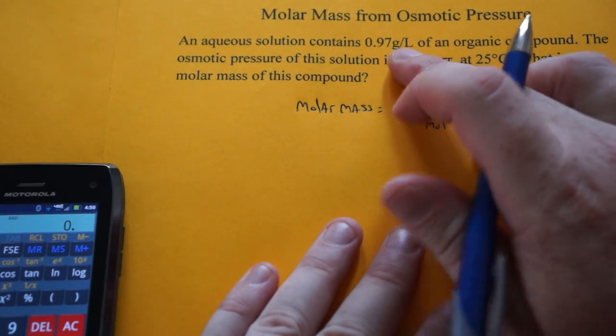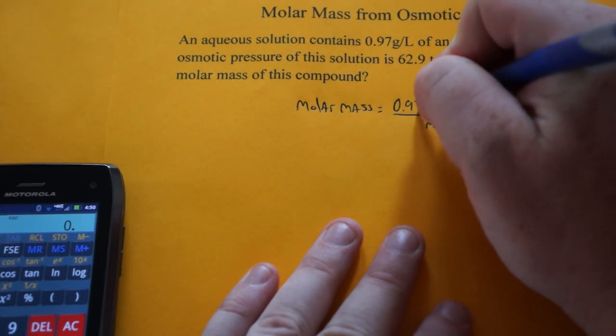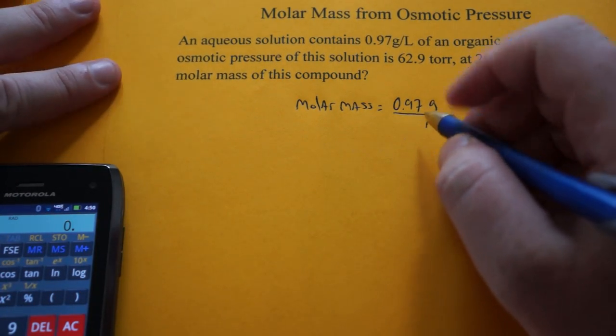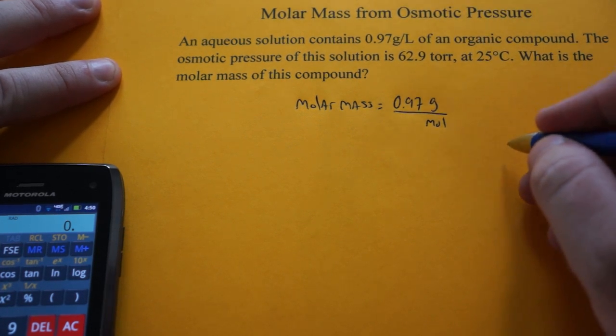So we have an aqueous solution that contains 0.097 grams per liter of an organic compound. So we're going to just use those grams and we're going to figure out our moles. And then we'll figure out our molar mass.